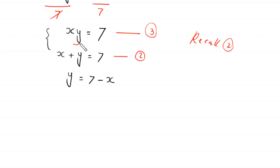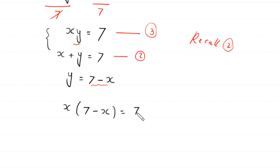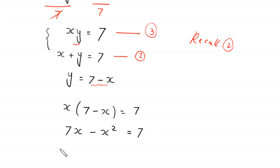From x plus y equals 7, we get y equals 7 minus x. Substituting into xy equals 7: x times (7 minus x) equals 7. Expanding: 7x minus x squared equals 7. Rearranging gives x squared minus 7x plus 7 equals 0.